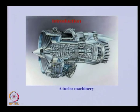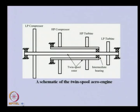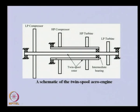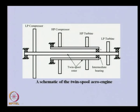Another example is turbo machinery used in aircraft. Because of space constraints, you can see there is a rotor mounting a low pressure compressor on one end and a low pressure turbine on the other, supported at two bearings. There is another rotor concentric with the main rotor, carrying a high pressure compressor and a high pressure turbine. These two concentric rotors are supported at intermediate bearings and rotate at different speeds.